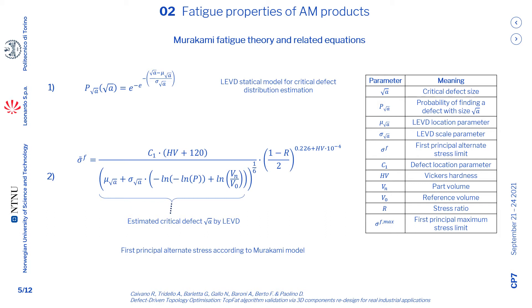Equation 1 expresses the LEVD distribution. It states the probability p of finding a defect with dimensions square root of area, which represents an equivalent measure for the defect's area. It is characterized by two main parameters, mu and sigma, which are the location and scale parameters of the distribution respectively. These parameters can be estimated experimentally, looking at the defect population of several samples. Reversing equation 1, it is possible to foresee the largest defect area under a certain probability p, and this can be employed within equation 2. This equation expresses the link between the defect population, the stress ratio, the material parameters, and the maximum allowable alternate first principal stress, sigma_f. This limit is the threshold which must not be exceeded in order to have a safe part in presence of defects.